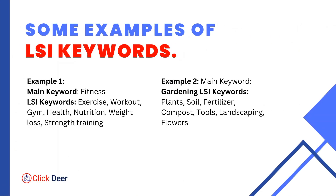Let me show you some examples of LSI keywords. In the first example, our main target keyword is 'fitness.' LSI keywords for fitness could be: exercise, workout, gym, health, nutrition, weight loss, and strength training. In the second example, our target keyword is 'gardening,' and the LSI keywords are: plants, soil, fertilizer, compost, tools, landscaping, and flowers. As you can see from these examples, LSI keywords are simply related keywords or search phrases.